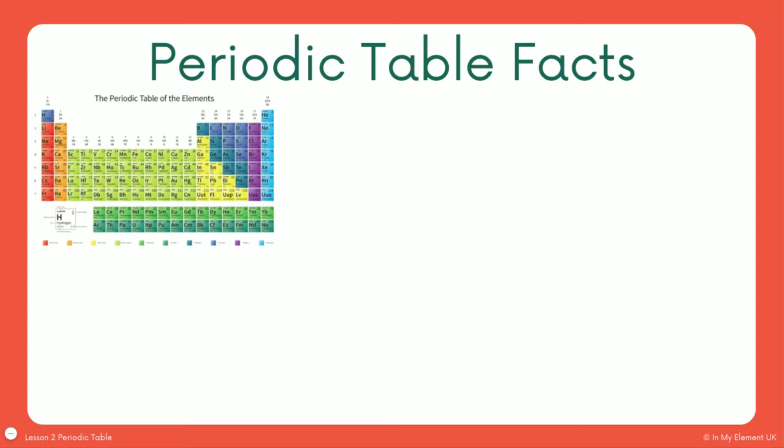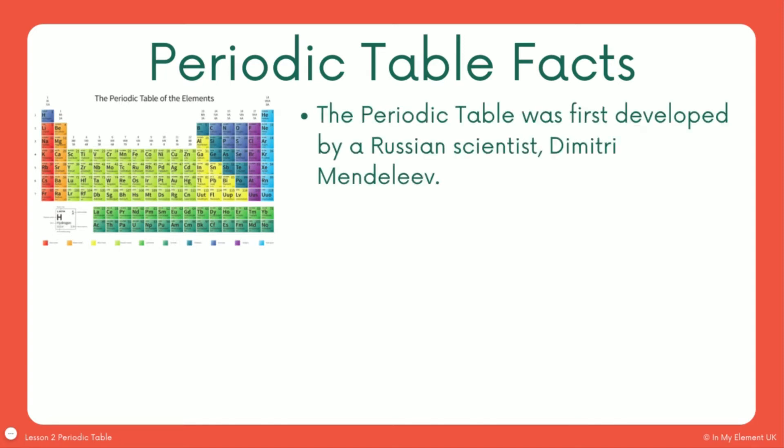This periodic table was first developed by a Russian scientist called Dmitry Mendeleev. Mendeleev is a name that you will recognize and hear about quite a bit. They might ask you questions on this and they'll talk about Mendeleev's periodic table. They might not have it in that format. They might have loads of information missing from it because he did it gradually. Mendeleev wrote this periodic table because he was beginning to notice similarities between elements. And what he did was he grouped them together. So he grouped them together in columns.